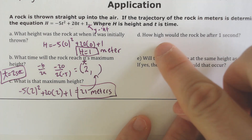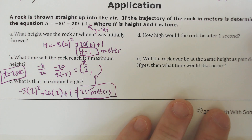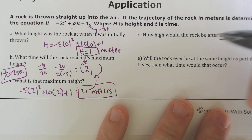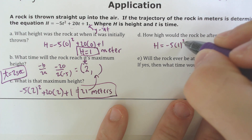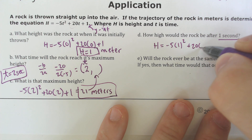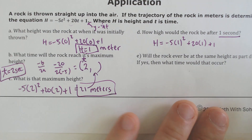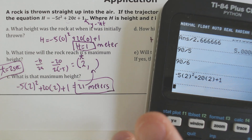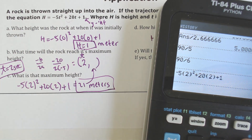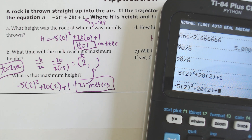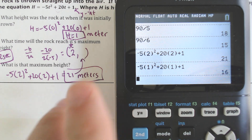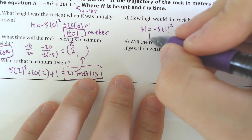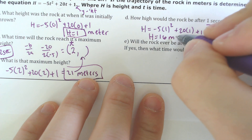How high would the rock be after 1 second? We know the time is 1 second, so let's just plug in 1. The height would equal negative 5 times 1 squared plus 20 times 1 plus 1. If we do the math there — using a calculator, you can just replace the values with 1 — and you get 16. So after 1 second, the height would be at 16 meters.